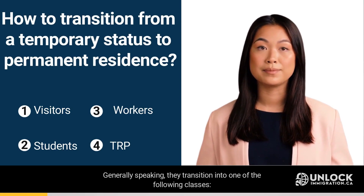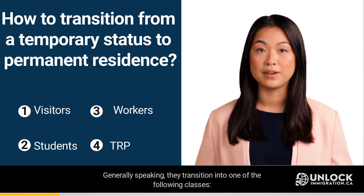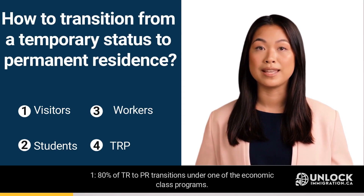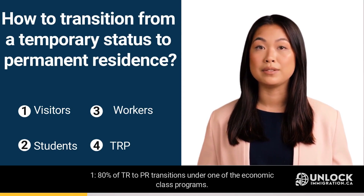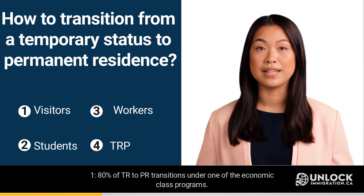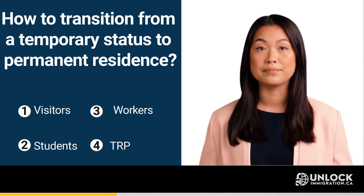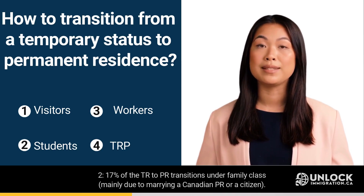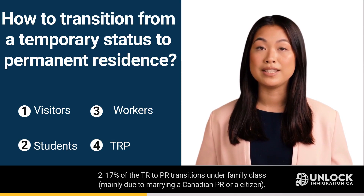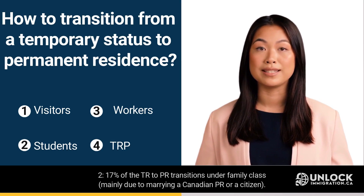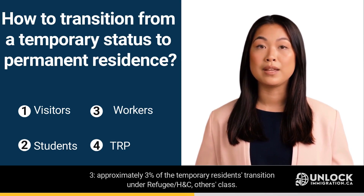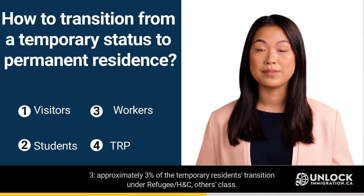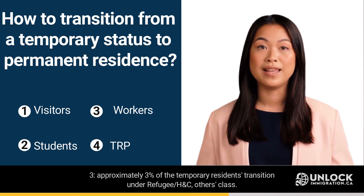Generally speaking, they transition into one of the following classes. 80% of TR to PR transitions occur under one of the economic class programs. 17% of the TR to PR transitions occur under family class, mainly due to marrying a Canadian PR or a citizen. Approximately 3% of the temporary residents transition under the refugee or H&C and others class.